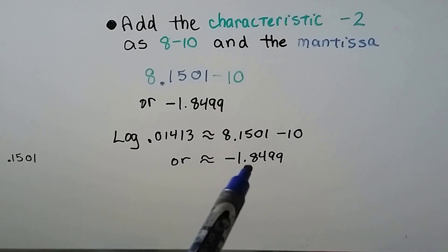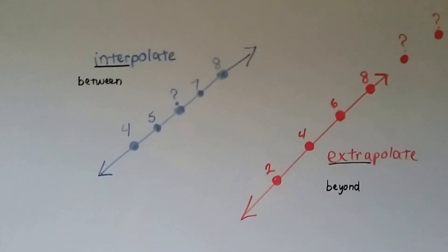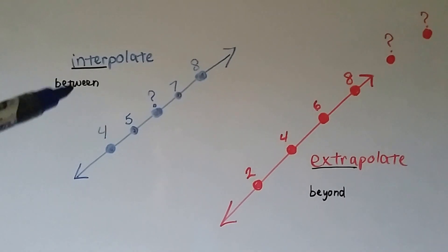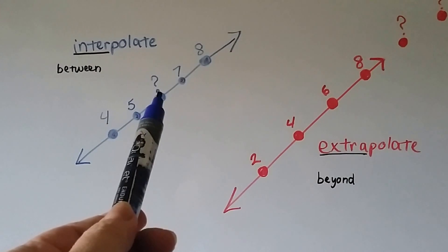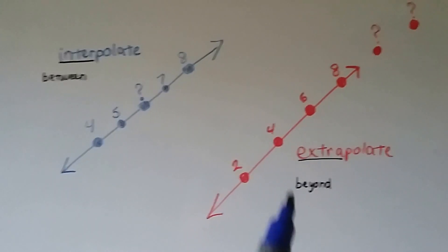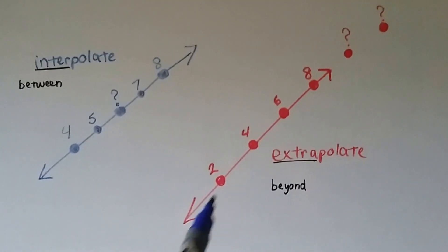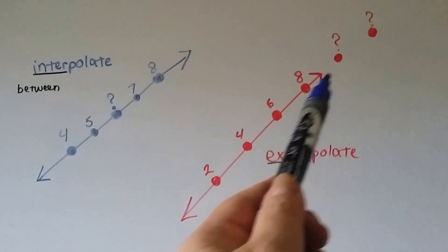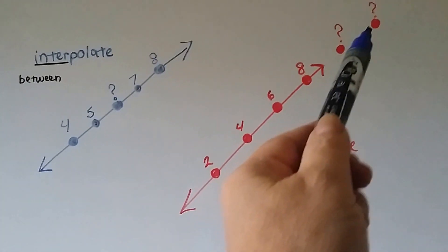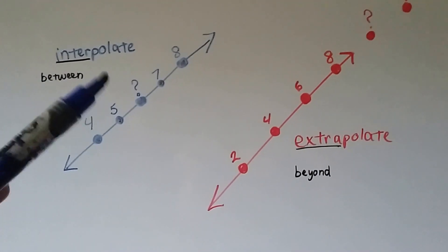To interpolate, this prefix means between. Inter means between. If we needed to find this value, it's in between values that we know. And then we figure out what it is. To extrapolate means we don't have the values, it's beyond. Extra means beyond. That means we're going to figure out what the values are by following this trend line. If these are all the same distance apart from each other, and that's 2, 4, 6, 8, we can pretty much extrapolate that that's a 10 and a 12. This is what we're doing: we're going in between values, and we're using the values on each side of it to help us figure out what that one is.